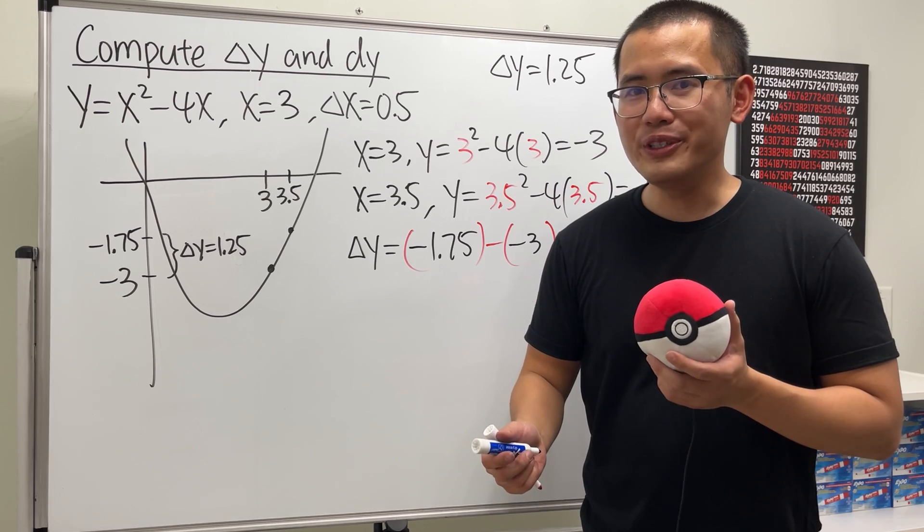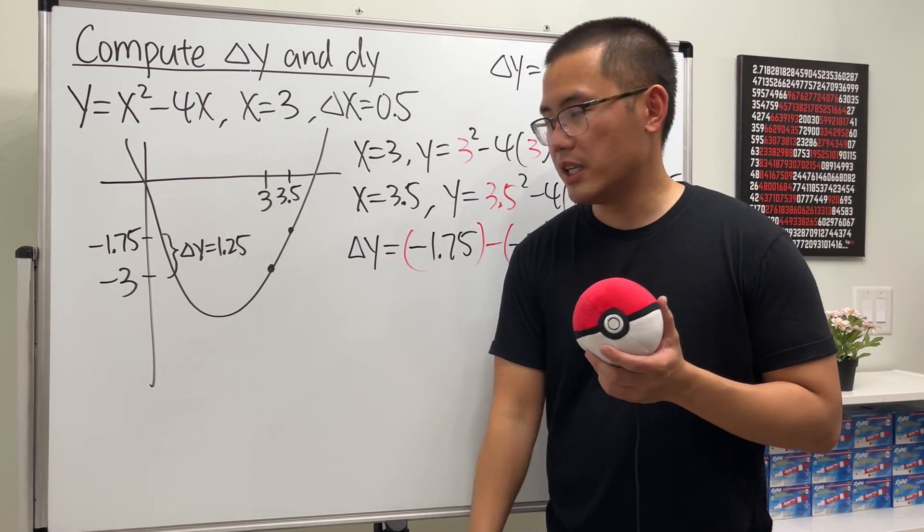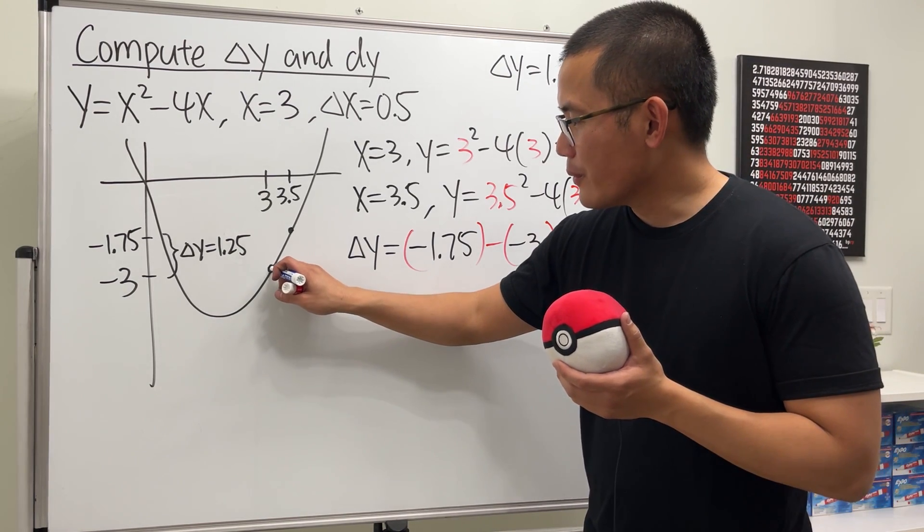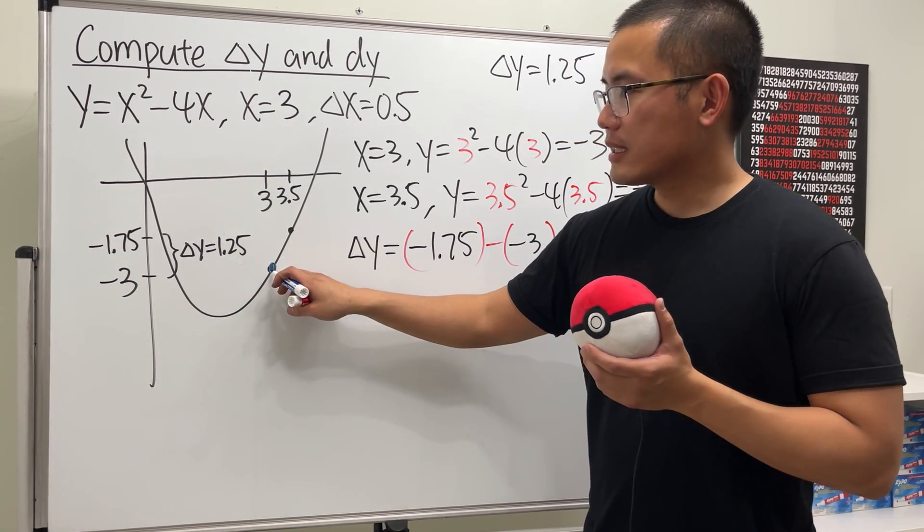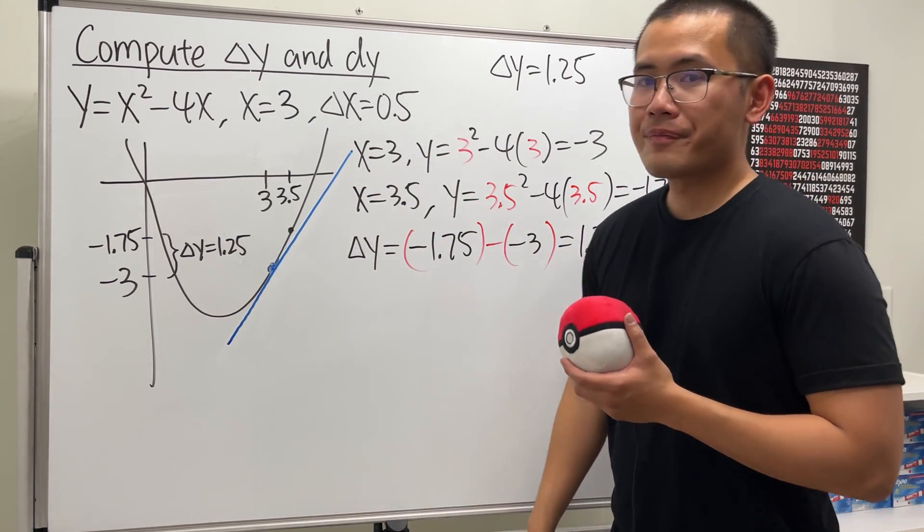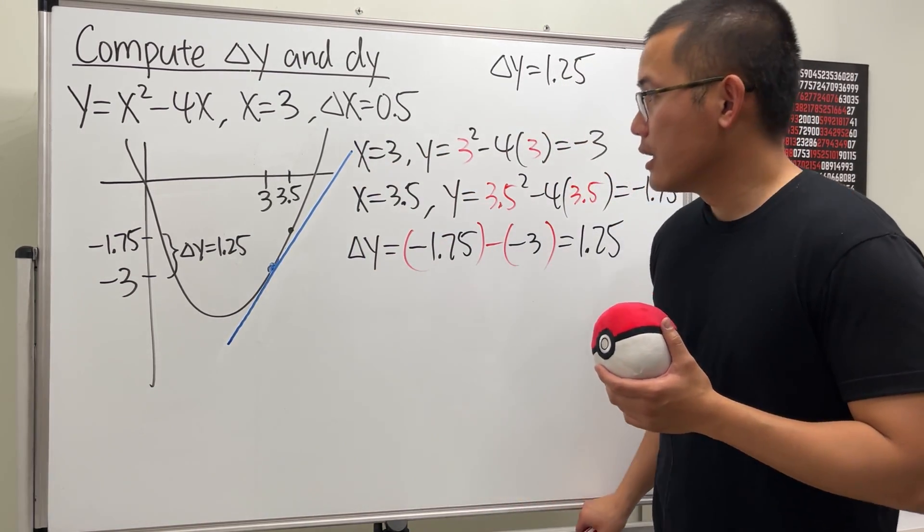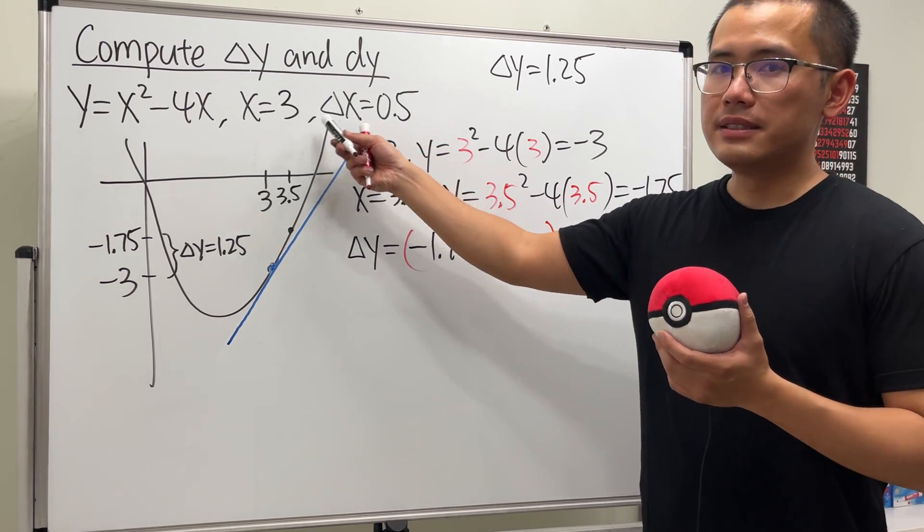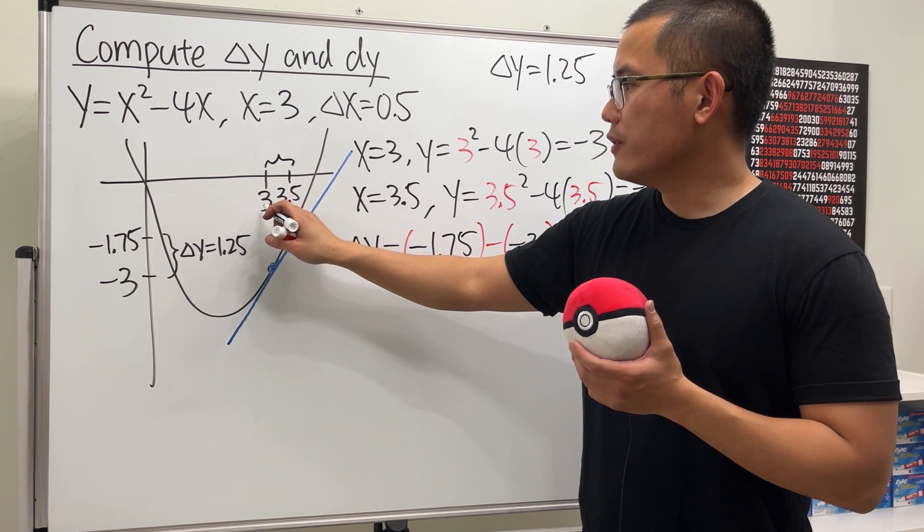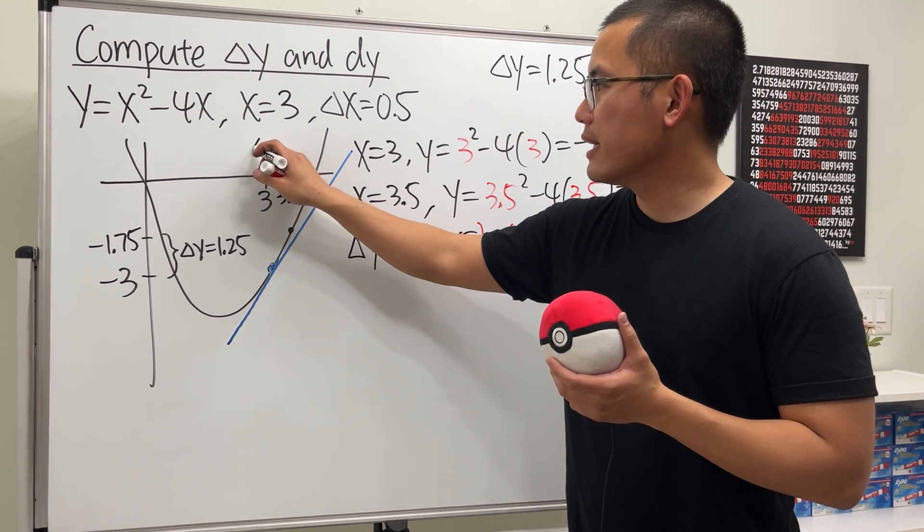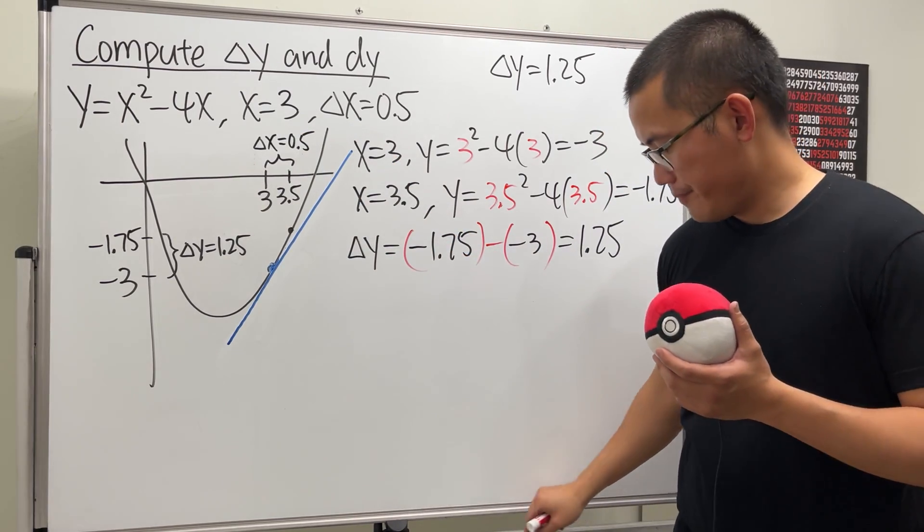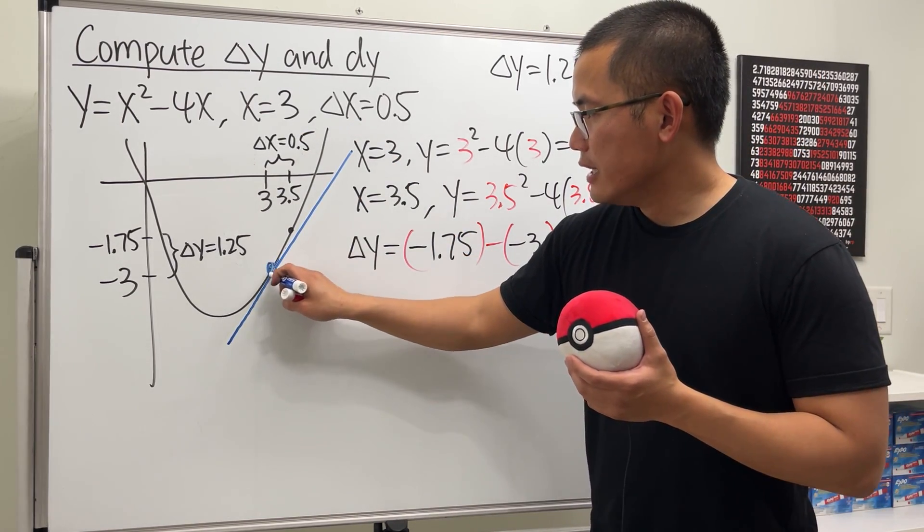How can we compute dy? Well, as I mentioned earlier, we will be using derivative, and derivative is just the slope of the tangent line. So here's how it goes. Let's come here and then let's draw a tangent line first.